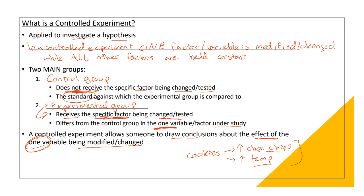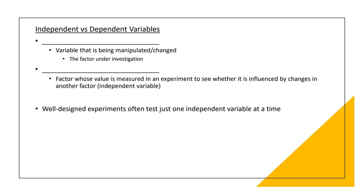Talking about control experiments, we have different variables. We have the independent and the dependent variable. Independent variable, the variable that is being manipulated or changed. The factor under investigation. We have also the dependent variable. The dependent variable is a factor whose value is measured in an experiment to see whether it is influenced by changes in another factor. In this case, the independent variable. And these experiments often test just one independent variable at a time.